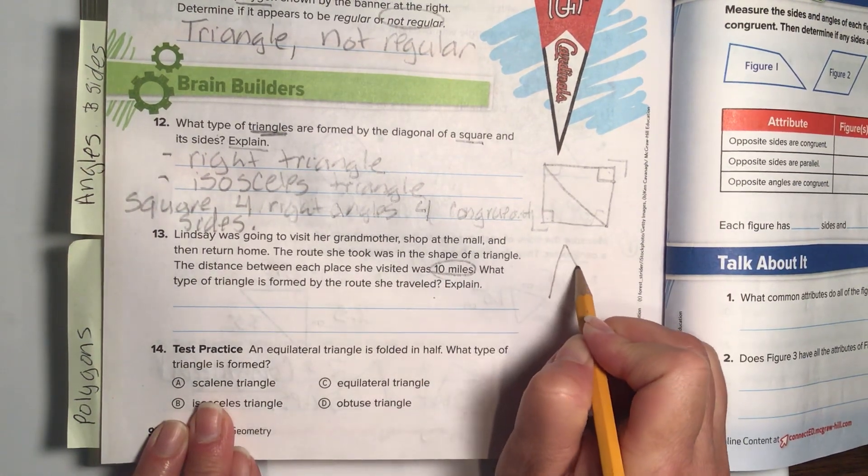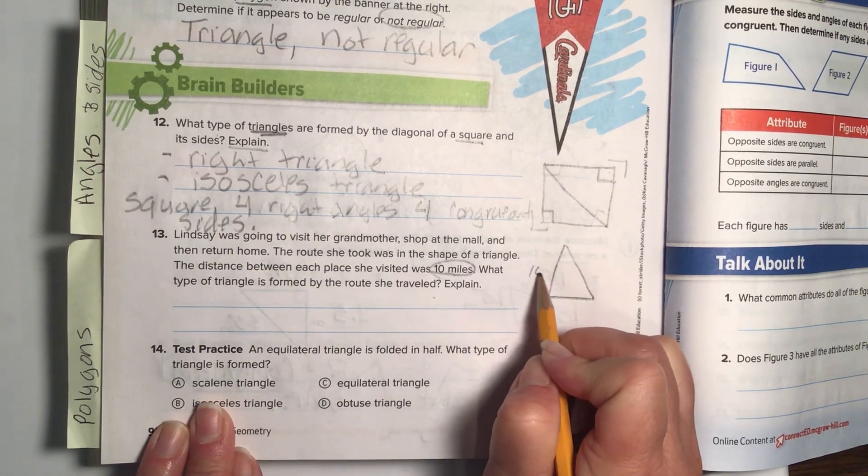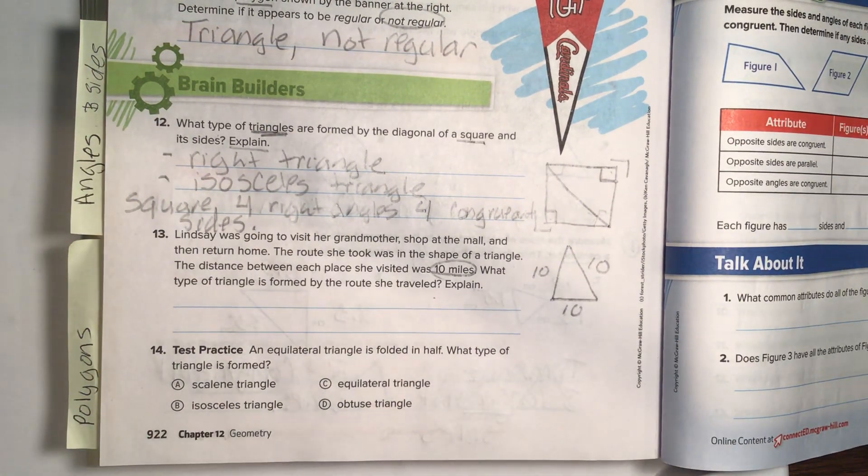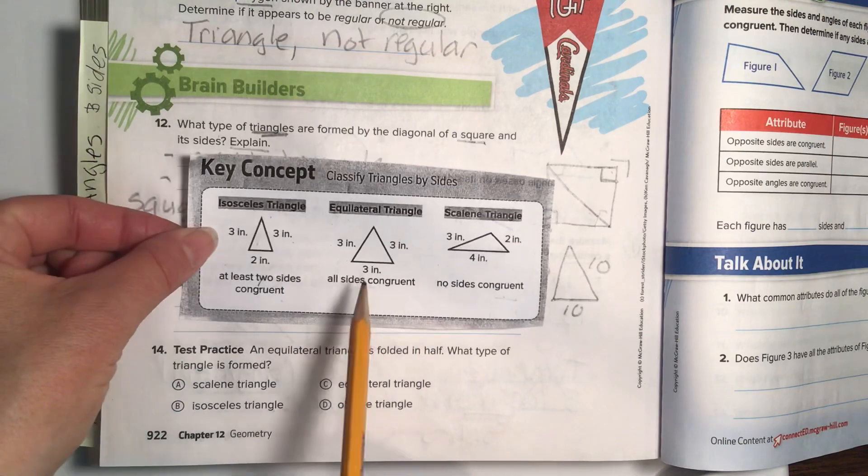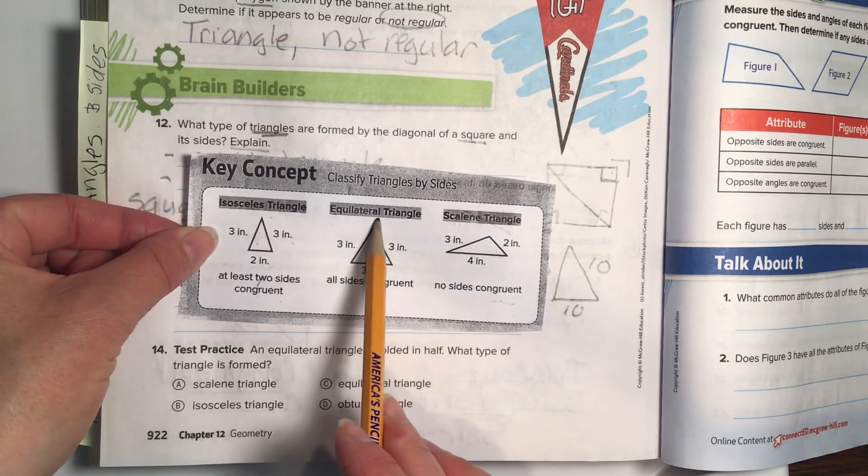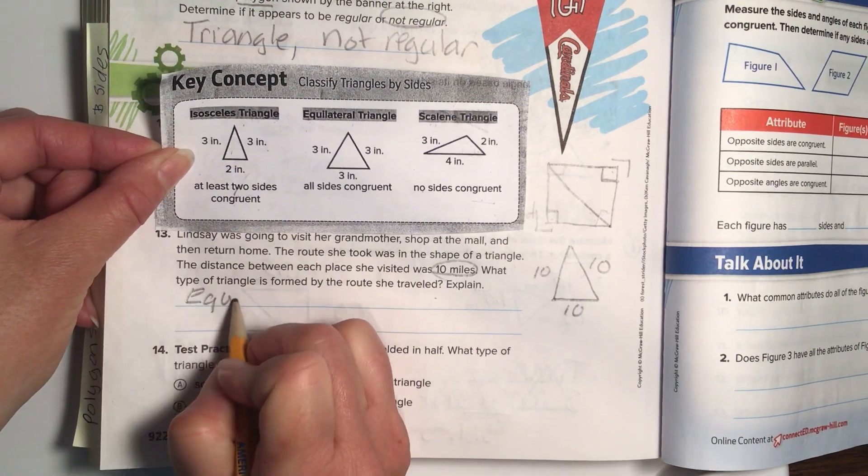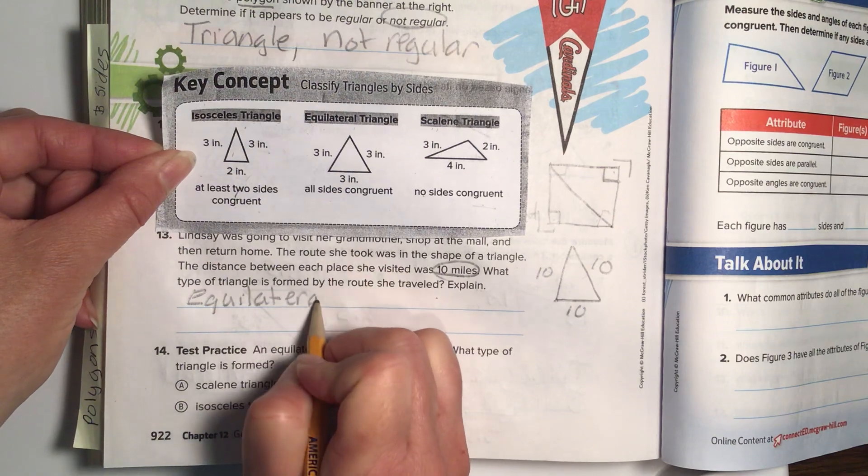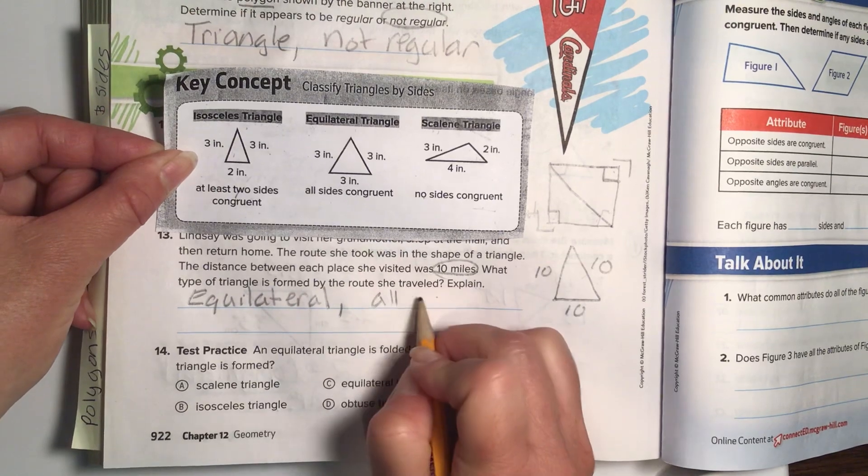Okay, so we need to have each of these sides be congruent. I'm sure you can draw it better than I, but you need to make sure that each of the sides sort of look like they're the same length, so they're all congruent. What type of triangles form by the route she traveled? All right, let's look at our sides, because we are talking about sides. All sides are congruent is equilateral. So, we're going to say equilateral. She traveled an equilateral, and we know this because all the sides are congruent. Great job.